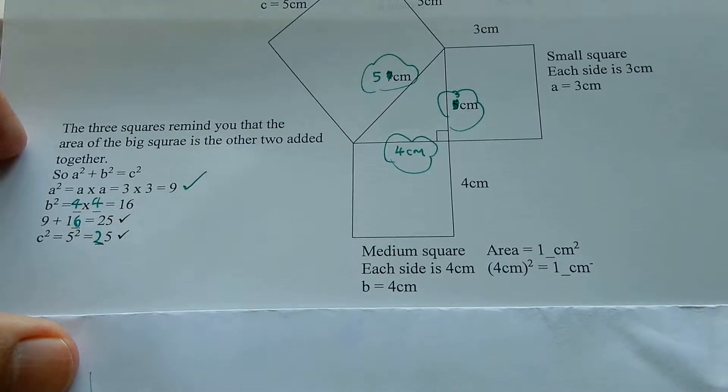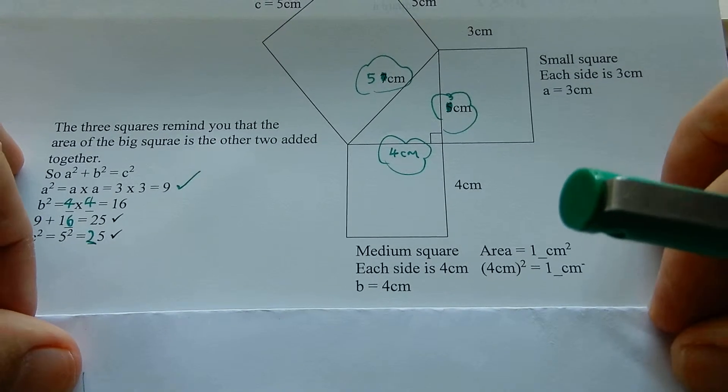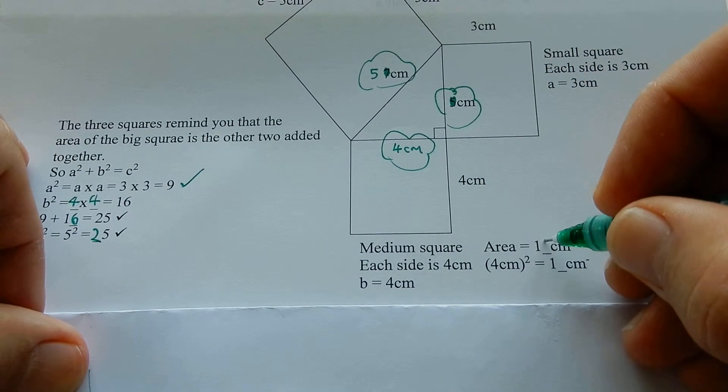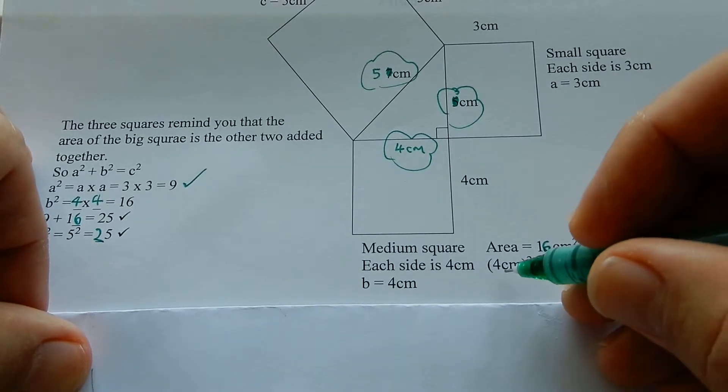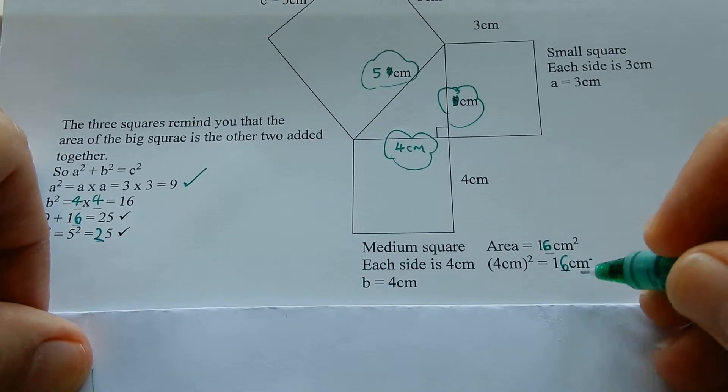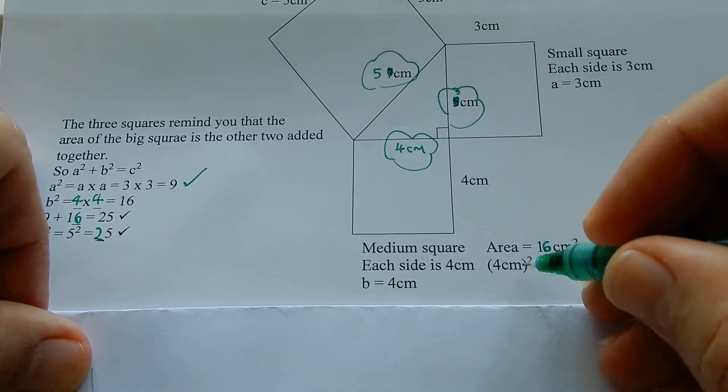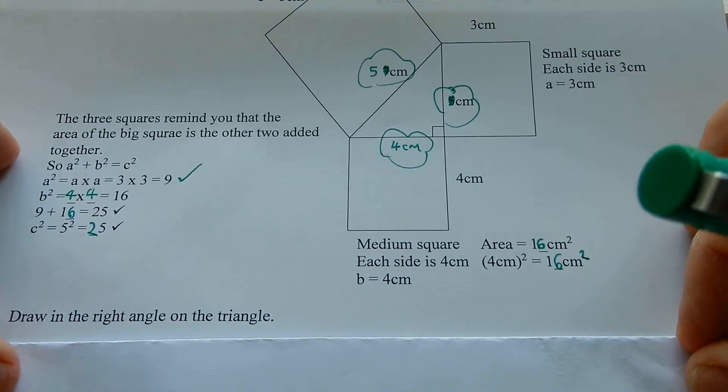Pythagoras found this out. Area is four times four is sixteen. Four centimeters squared gives sixteen centimeters squared. Centimeters times centimeters gives centimeters squared.